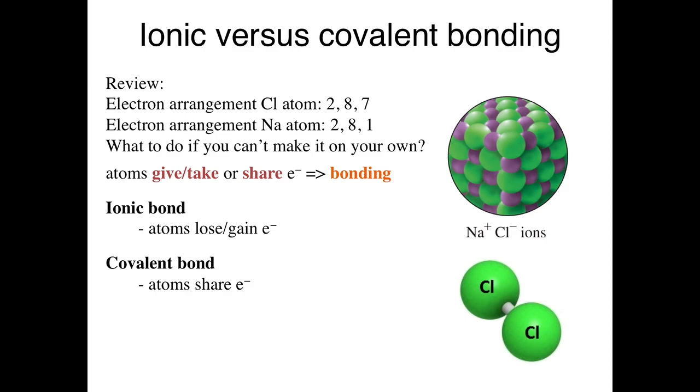And it turns out giving one electron away is so much simpler than taking seven electrons from someone else. So you can imagine sodium and chlorine striking a deal and saying, hey, if I give you my one electron, you can have eight electrons as your valence electron.